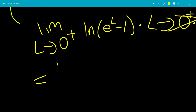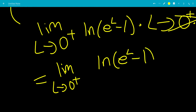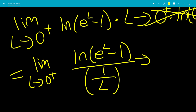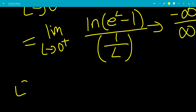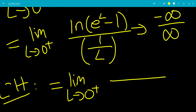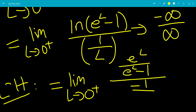We rewrite as the limit as L→0⁺ of ln(e^L − 1) over (1/L), giving −∞/∞ form, so we can use L'Hôpital's rule. The derivative of the top is e^L/(e^L − 1), and the derivative of the bottom is −1/L². Taking out the negative and multiplying top and bottom by L², the bottom terms cancel.